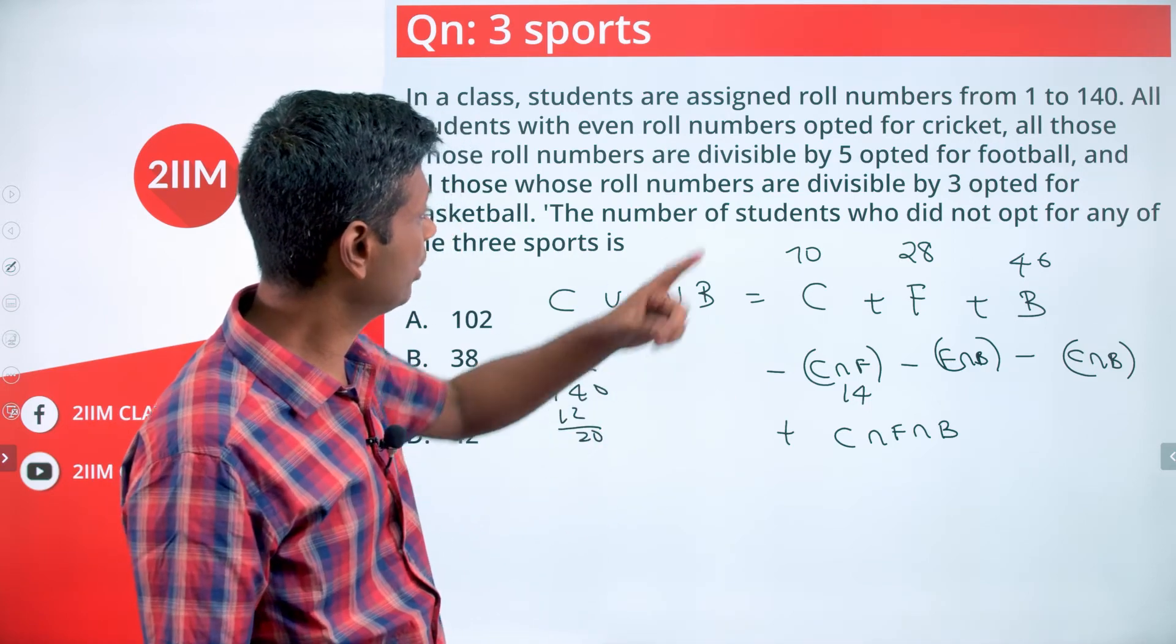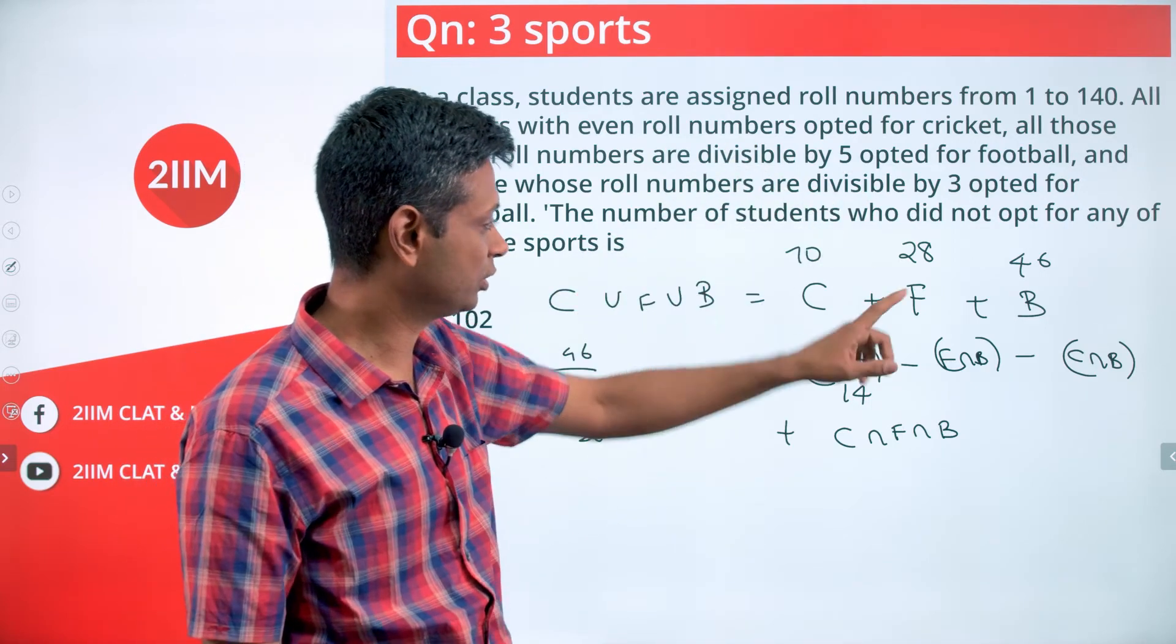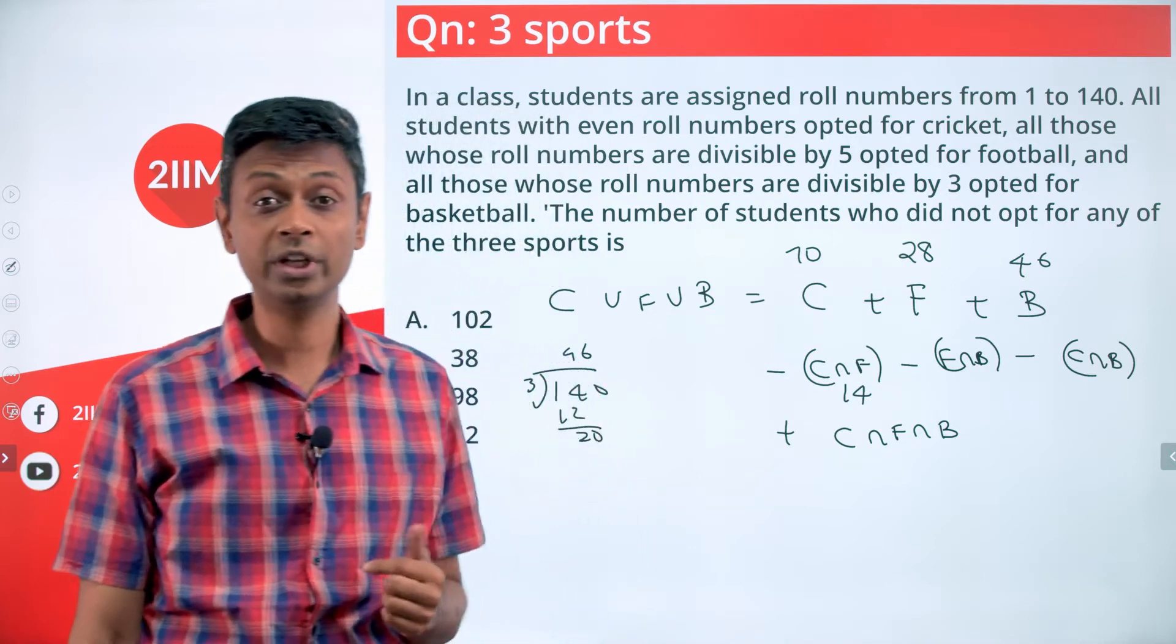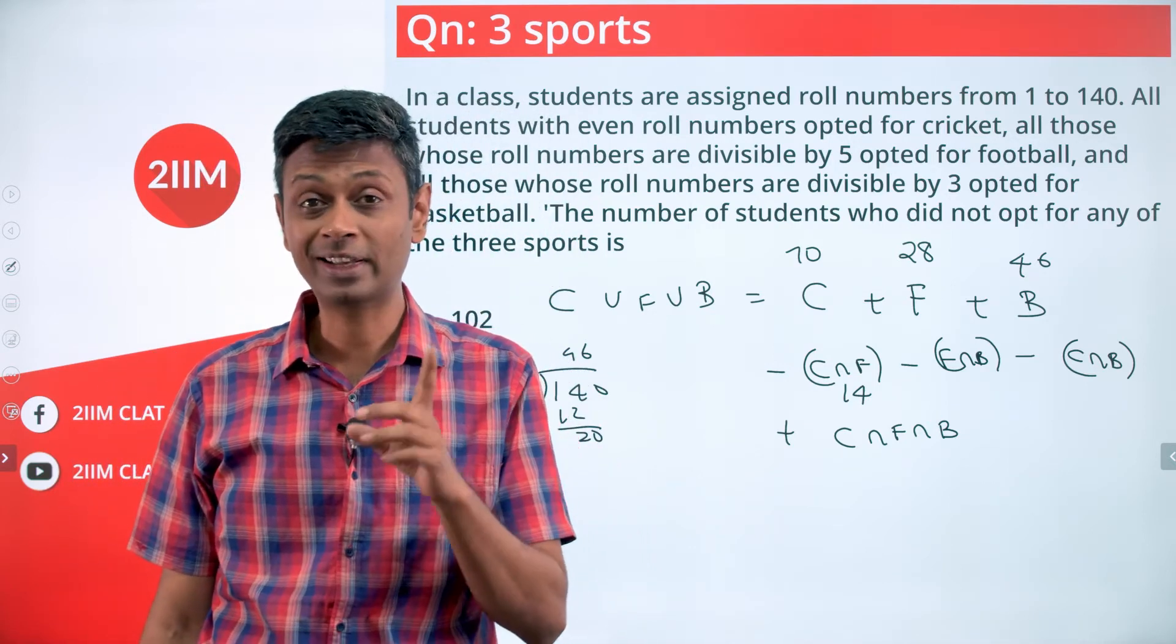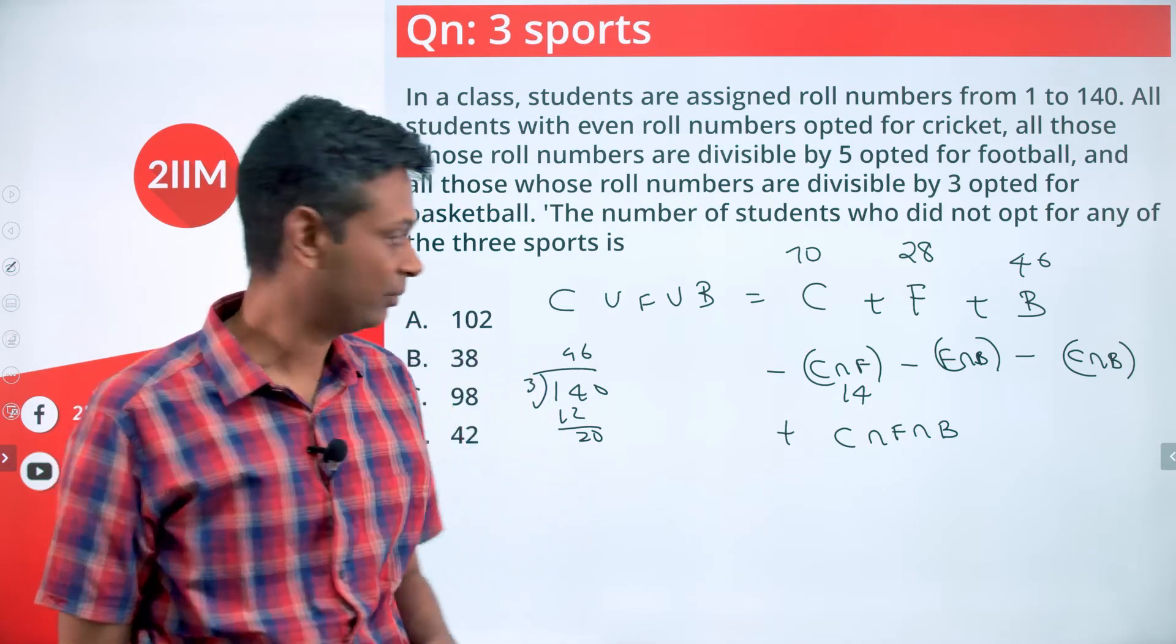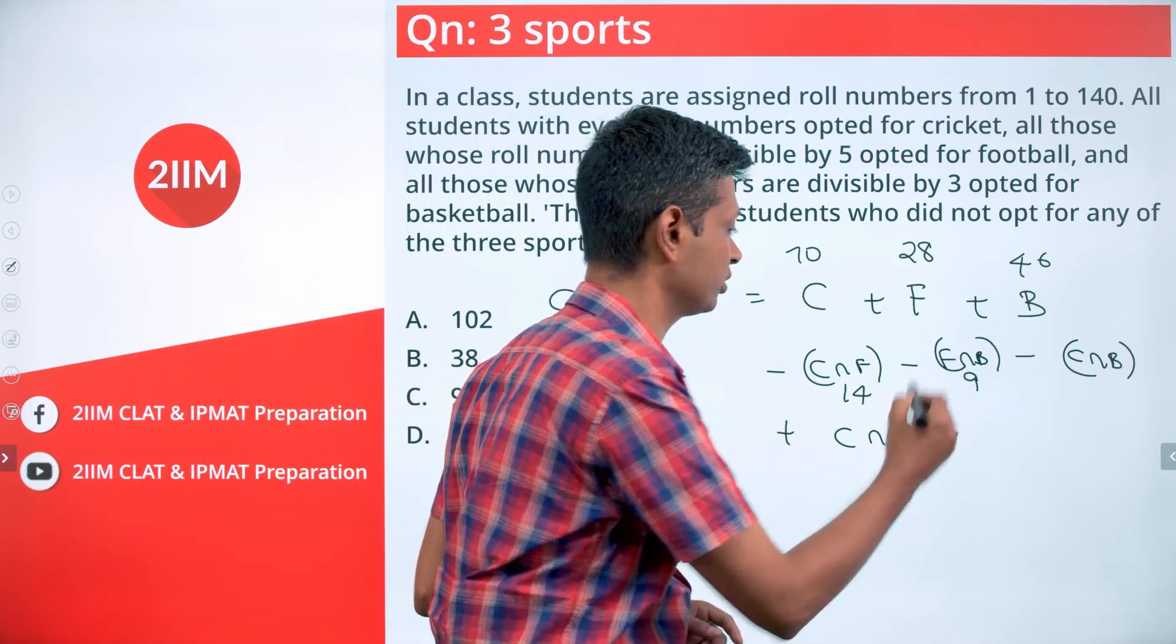Football intersection basketball: multiples of 5 and multiples of 3, which are multiples of 15 (15, 30, 45, 60... till 135). Since 135 = 15×9, there are 9 numbers in this list.